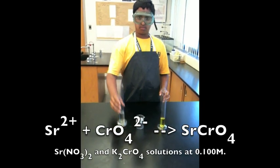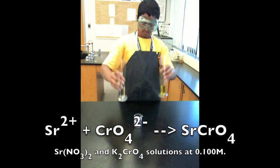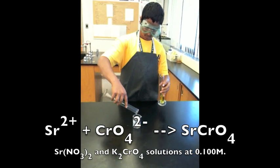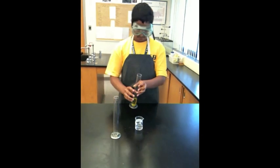In order to create strontium chromate from its ions, we took their nitrate and potassium solutions, respectively, and poured them together in a beaker.